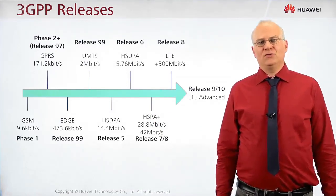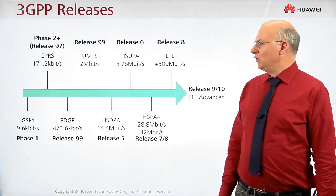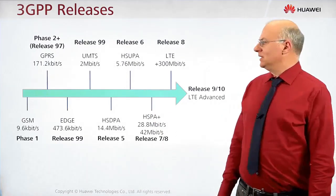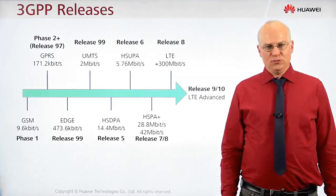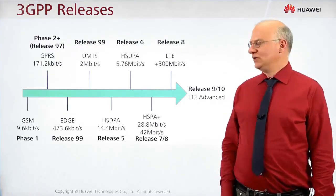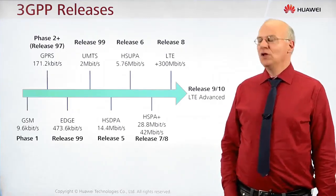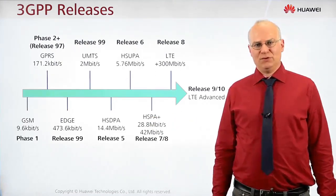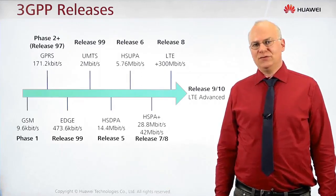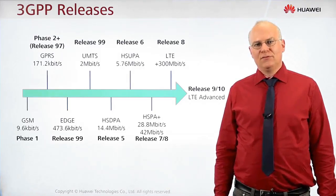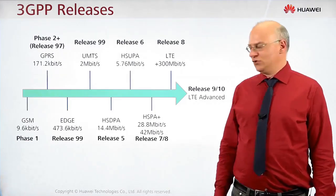The first standard 3GPP developed was in the year 1999, and therefore the release was called Release 99. It was the first release introducing UMTS, Universal Mobile Telecommunication System, offering a data rate of 2 megabit per second, fulfilling the ITU requirements for a third generation system.